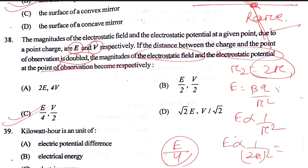The potential V is equal to Q/R, so it is inversely proportional to R. If the distance is doubled to 2R, the potential becomes V/2. So the answer is C.